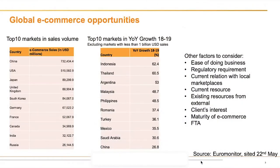As you can clearly see from the map, China and the USA are the two biggest e-commerce markets, followed by Japan and Korea. However, when you are considering which market to grow into first, there are a few factors you should consider. The first factor is the total e-commerce sales volume in each market. As explained, China and the USA are the two largest e-commerce markets globally, followed by Japan, UK, South Korea, and Germany.